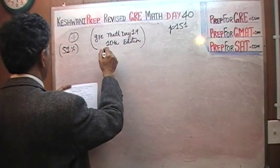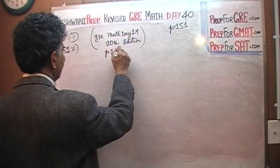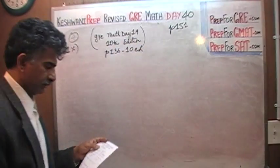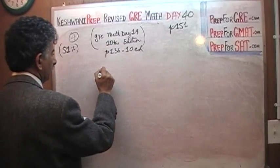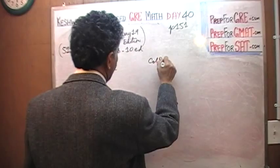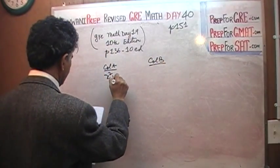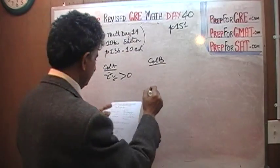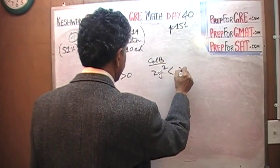This is the same question that appears on page 136 of the 10th edition. Here is the question: Column A, Column B. We are told that x squared times y is positive, and x times y squared is negative.